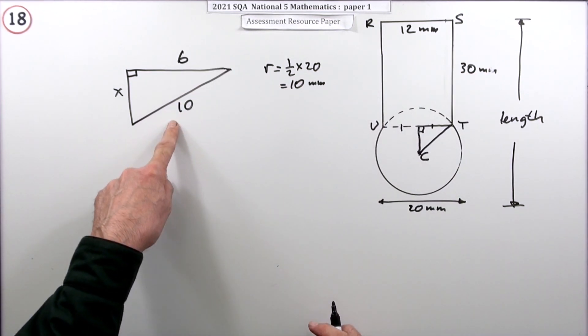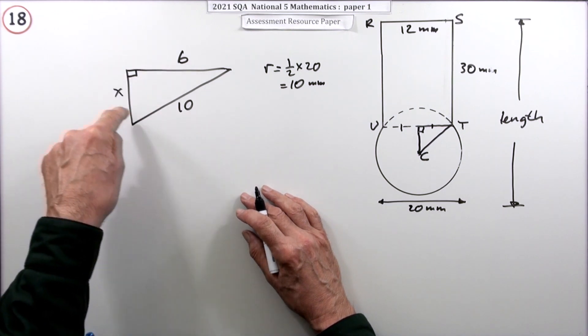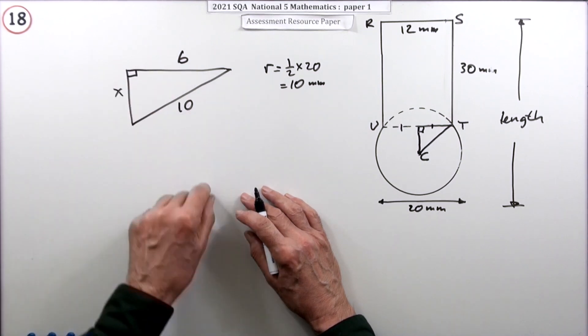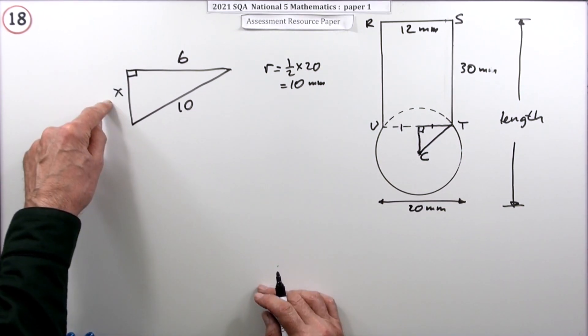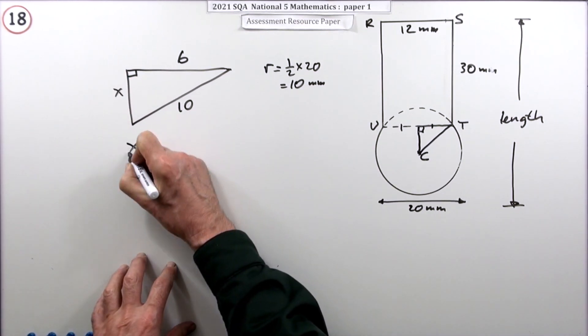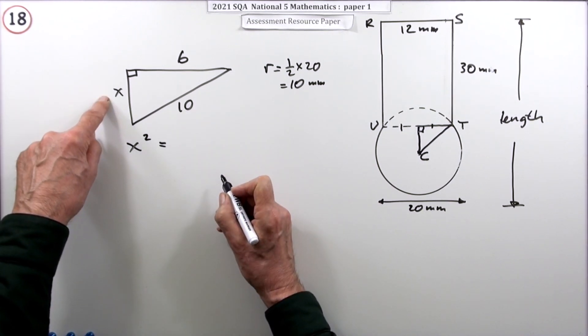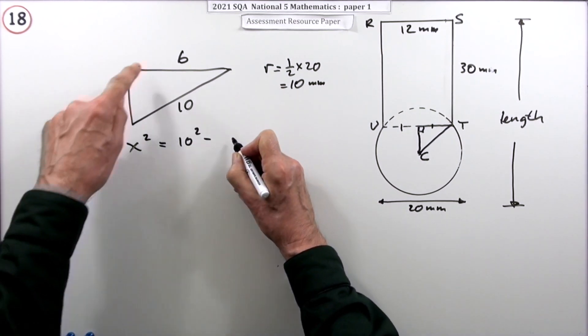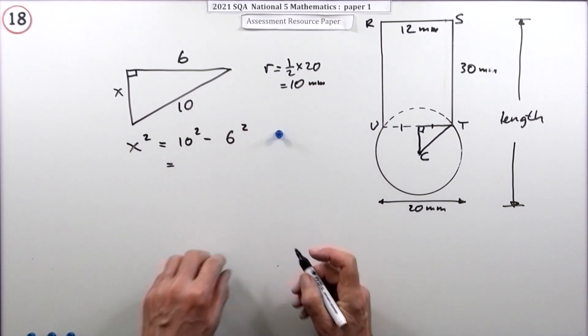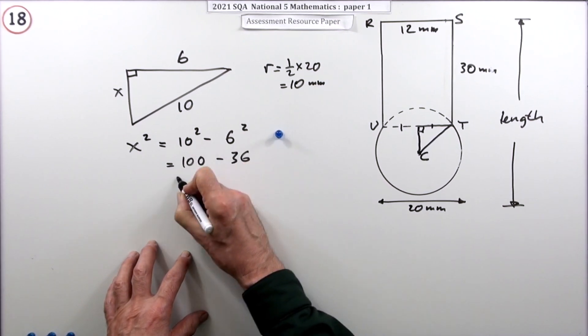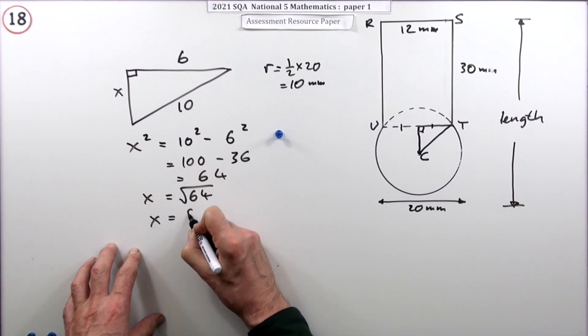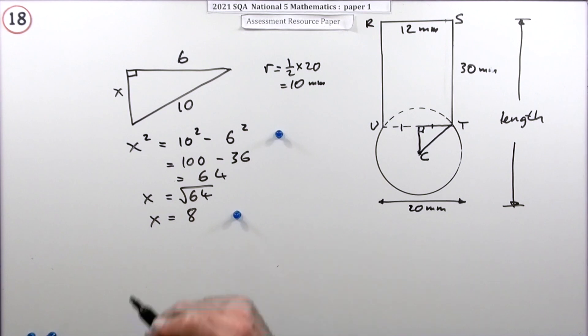You could go straight to your answer if you recognize you've got a multiple of a 3-4-5 triangle - that would be 8 straight away because it's double. But failing that, you work out the shorter side: the longer side squared minus the other short side squared. So 10 squared minus 6 squared, that gets a mark. That's 100 minus 36 which is 64, so x is the square root of 64, so x is 8.